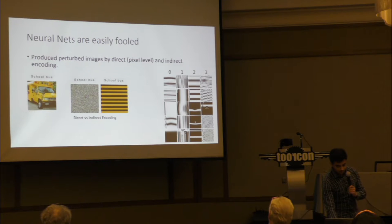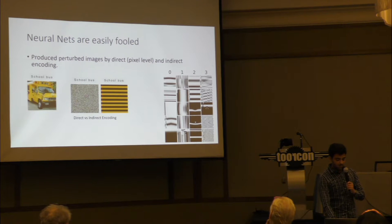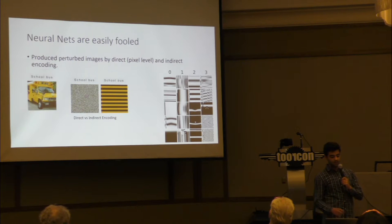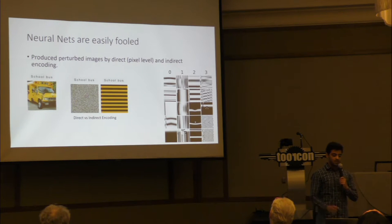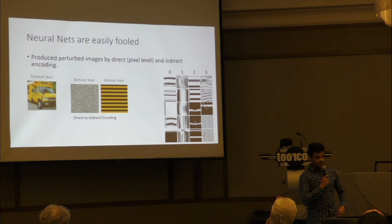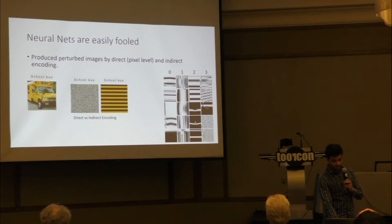If you look at the school bus here, this is one perception of machine learning and it gets classified as school bus. Now this is another perception of a school bus by the computer, based on direct encoding — a pixel-level mapping. The stripes version is an indirect encoding where you map a pattern onto nearest neighbors. Surprisingly, with human-level performance of these neural networks, you get these perceptions — and these are not school buses.